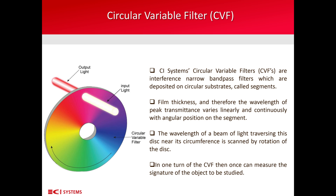My first lecture will be on circular variable filters. Circular variable filters are interference narrow band pass filters deposited on circular substrates called segments. Film thickness and therefore the wavelength of peak transmittance varies linearly and continuously with the angular position on the segment. The wavelength of a beam of light traversing this disk near its circumference is scanned by rotation of the disk.